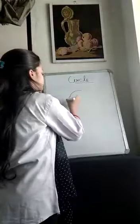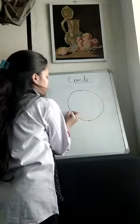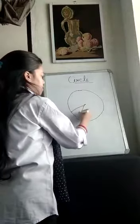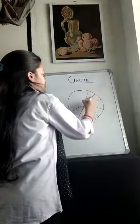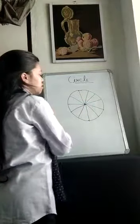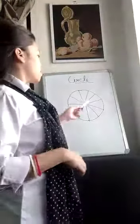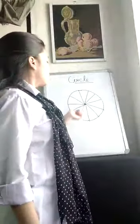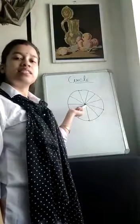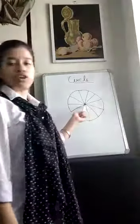A circle is a simple closed figure whose every point is at equal distance from its fixed point, also called the center point of the circle.